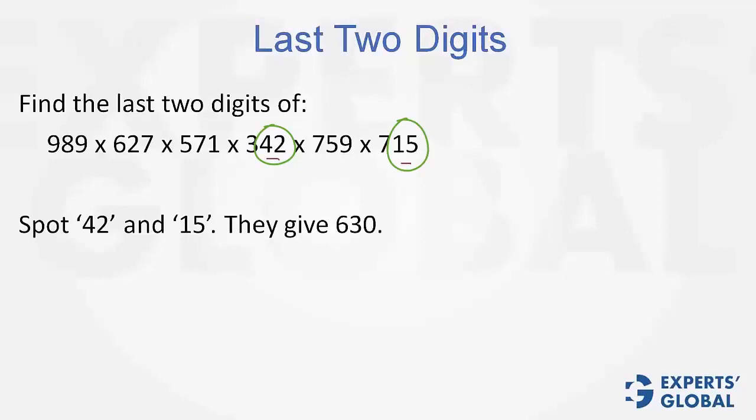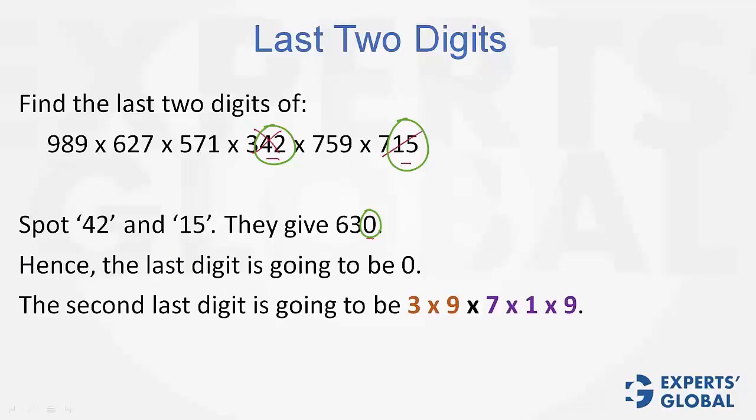Multiply these first. You get 630. And once you have got one 0 here, you know that the last digit is going to be 0. 42 has been taken, 15 has been taken. You have a 0 at the end.